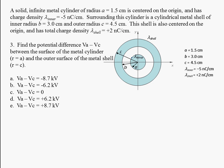On the third part of this problem, they ask us to find the potential difference between the outer surface of the inner cylinder and the outer surface of the outer shell.